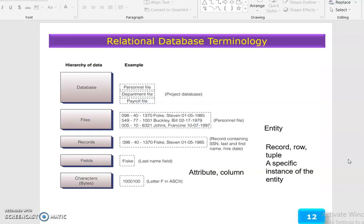The relational database terminology hierarchy of data: database, files, records, fields, characters. These are the examples - each column or attribute, and each row or tuple is a specific instance of the entity.